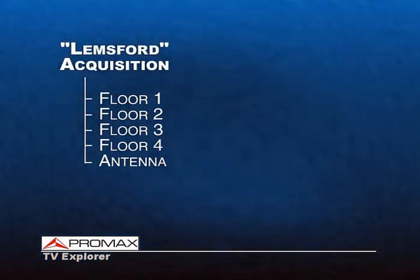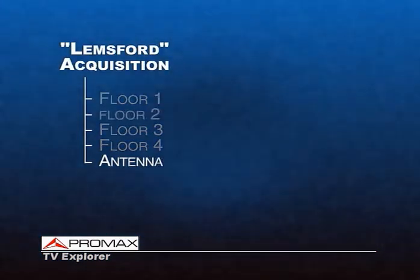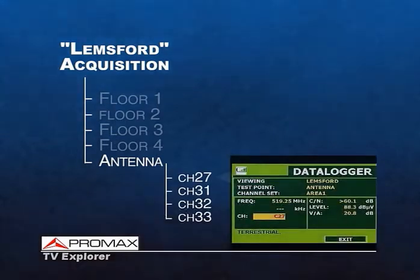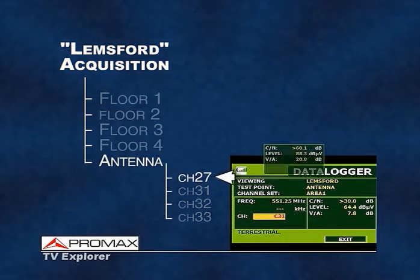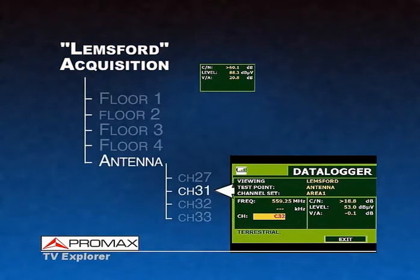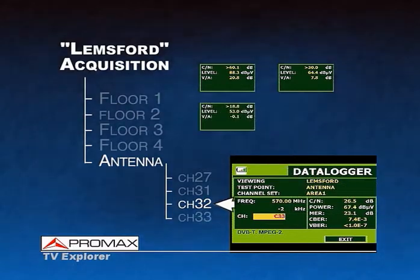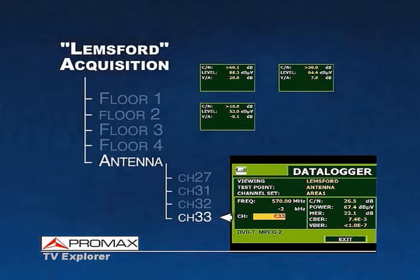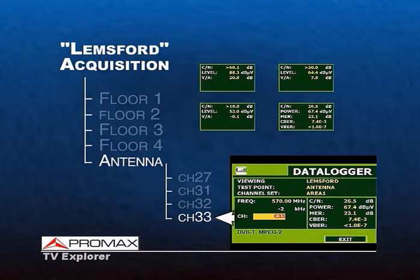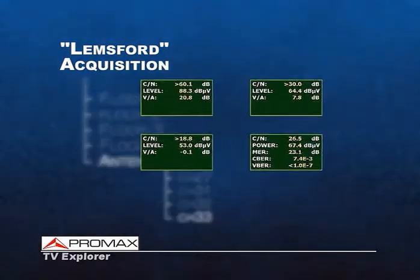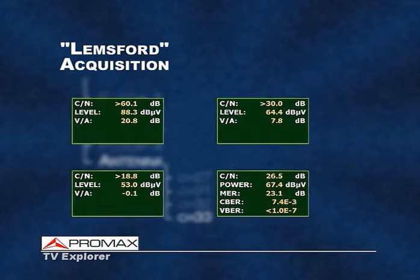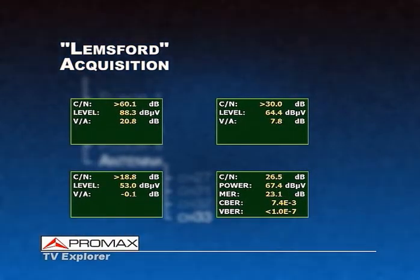By selecting the antenna, for example, it is possible to review the recorded measurements for all channels: channel 27, channel 31, channel 32, and channel 33. In this way, we can easily check all the signal parameters to determine signal quality in the available channels — both analog and digital signals.